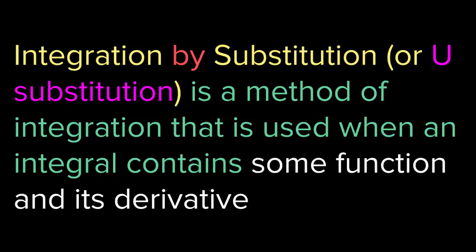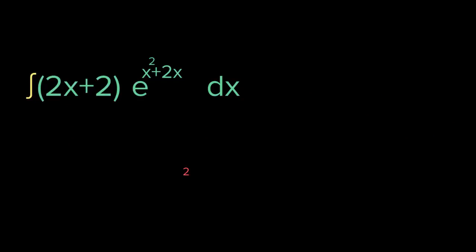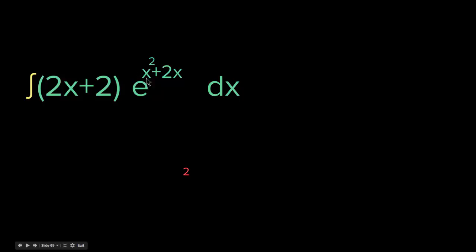Let me show you how it works with an example. We want to find the integral of (2x + 2) times e to the (x² + 2x). This looks complicated, but if you look closely, the function x² + 2x has derivative 2x + 2 — which is exactly what we have. When you have something like that, it's a signal that you can use u-substitution.